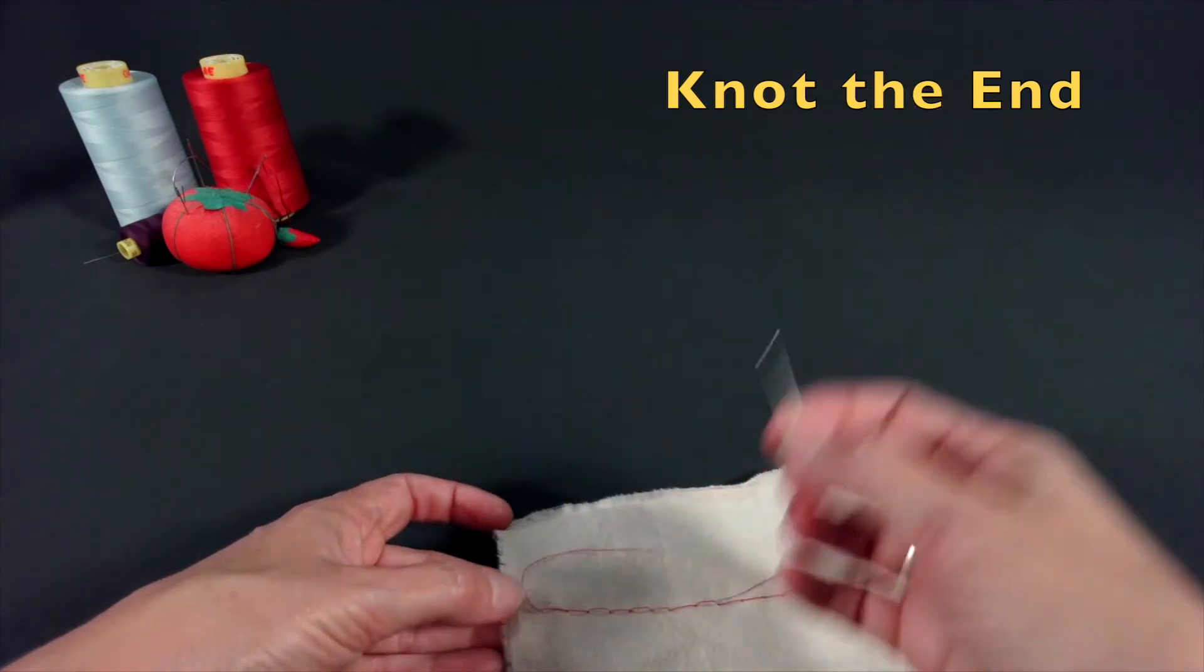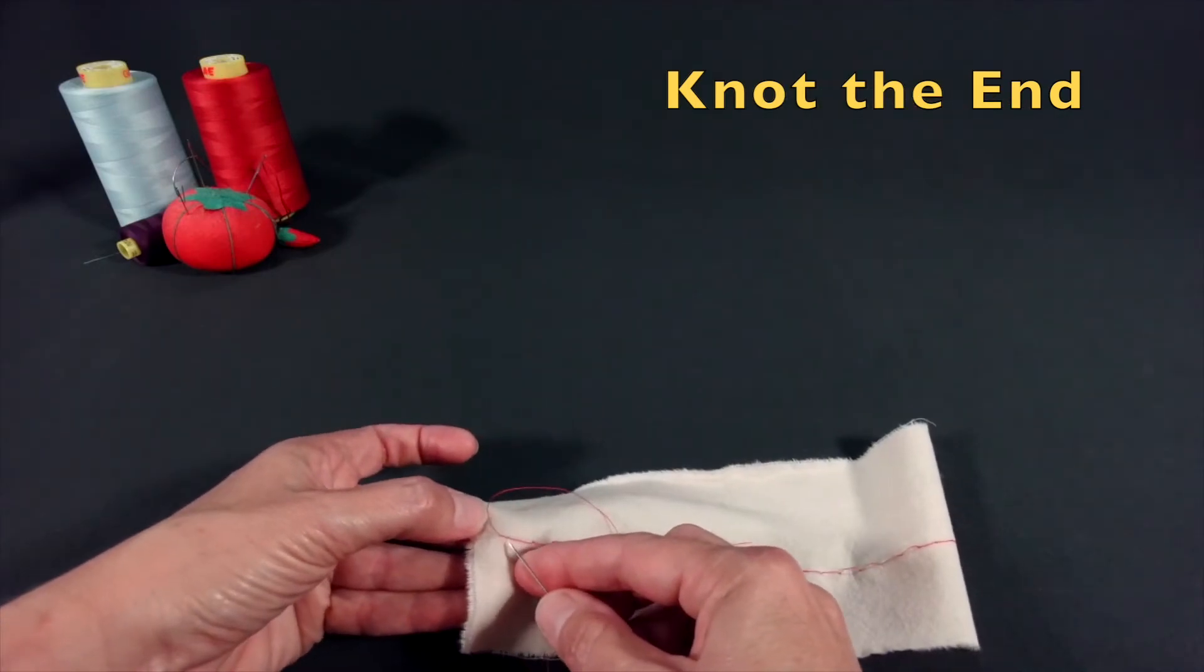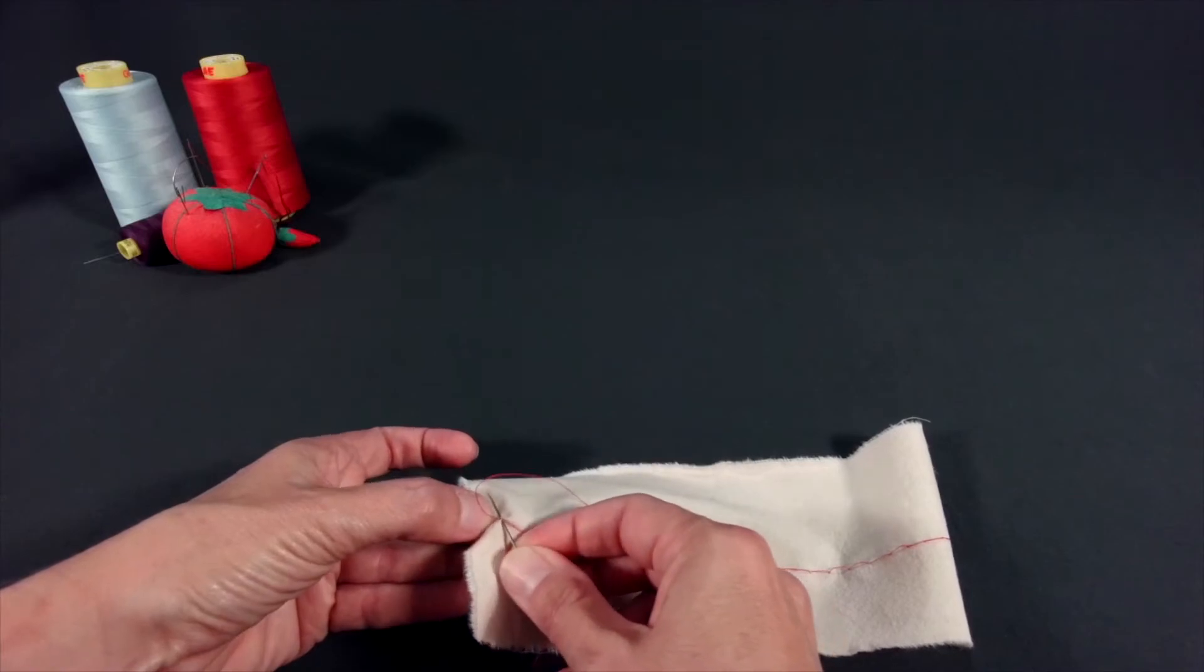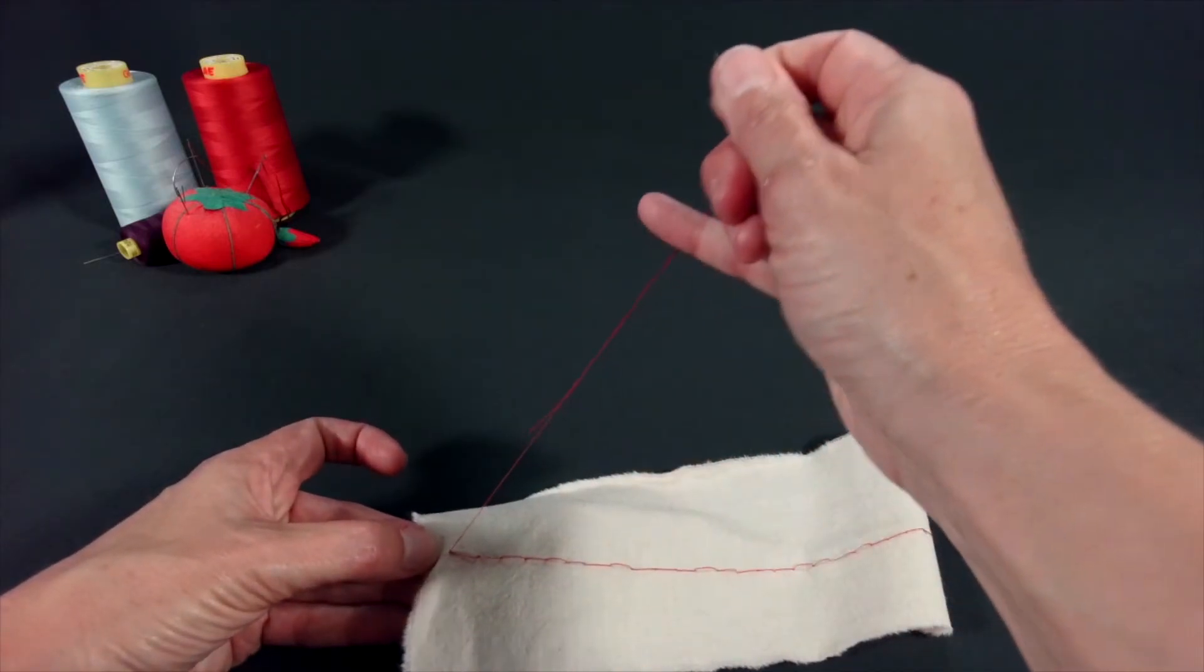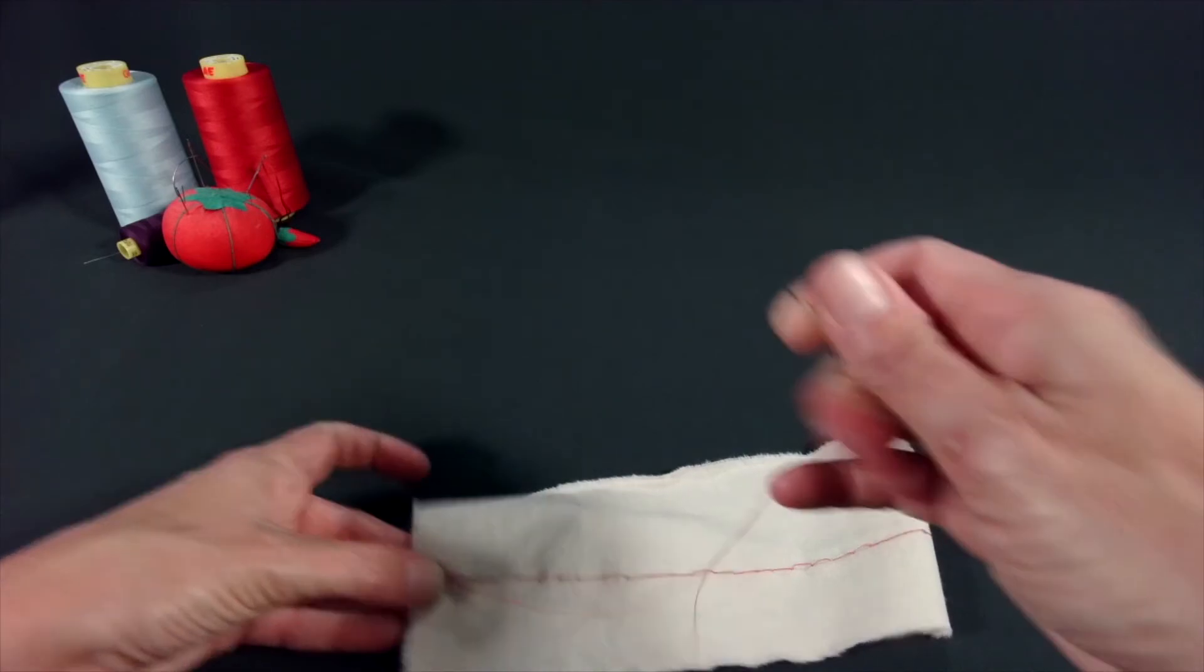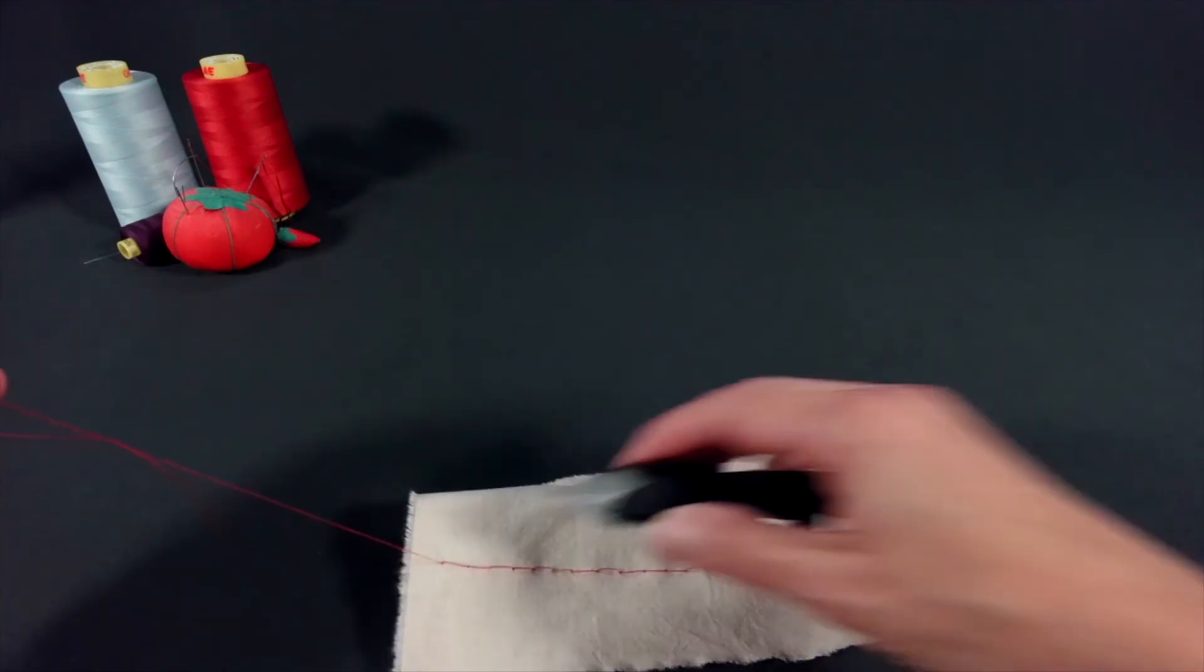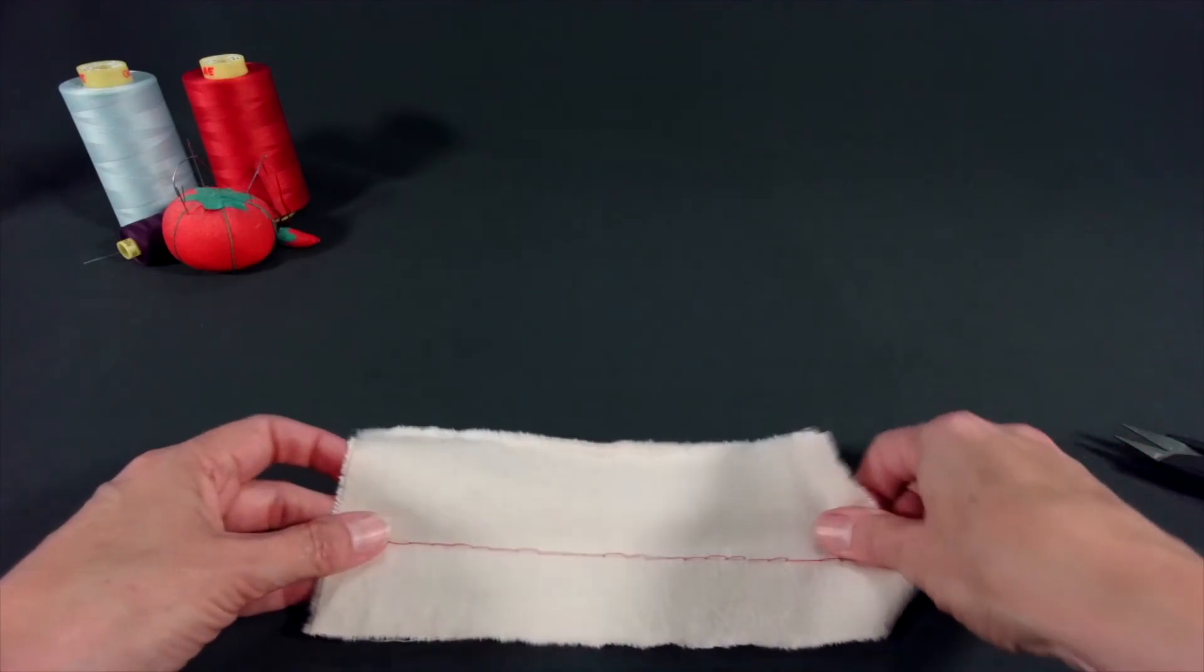When you get to the end of your guideline, it is time to knot the thread. Take a prick pick in place, pulling your needle through the loop of your thread. Cut the end, and you are all done.